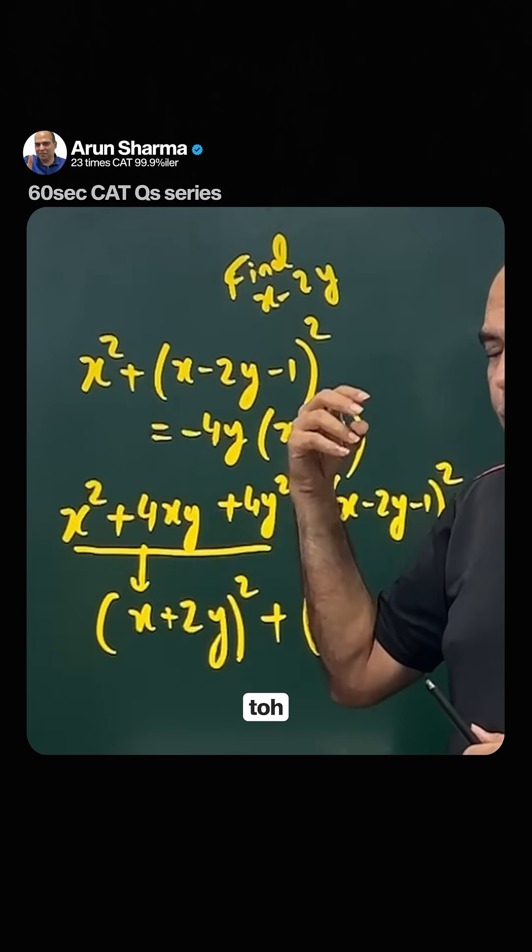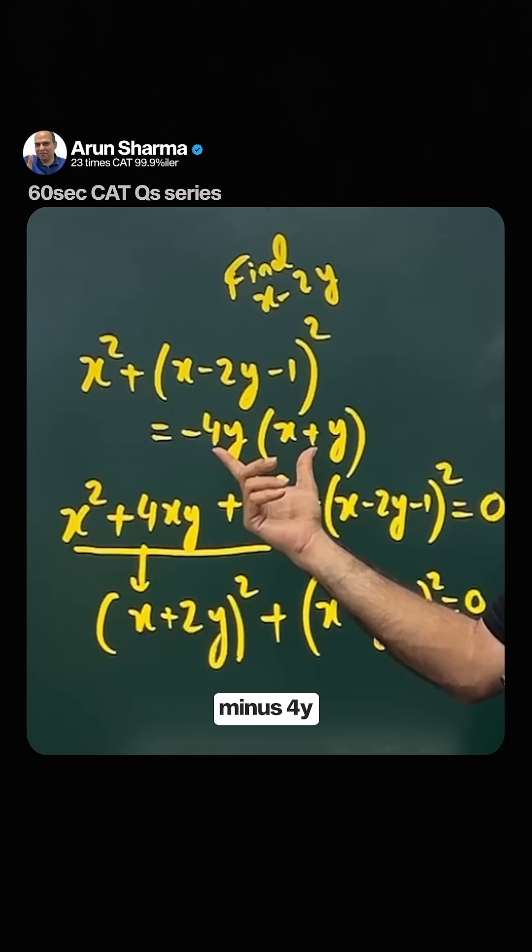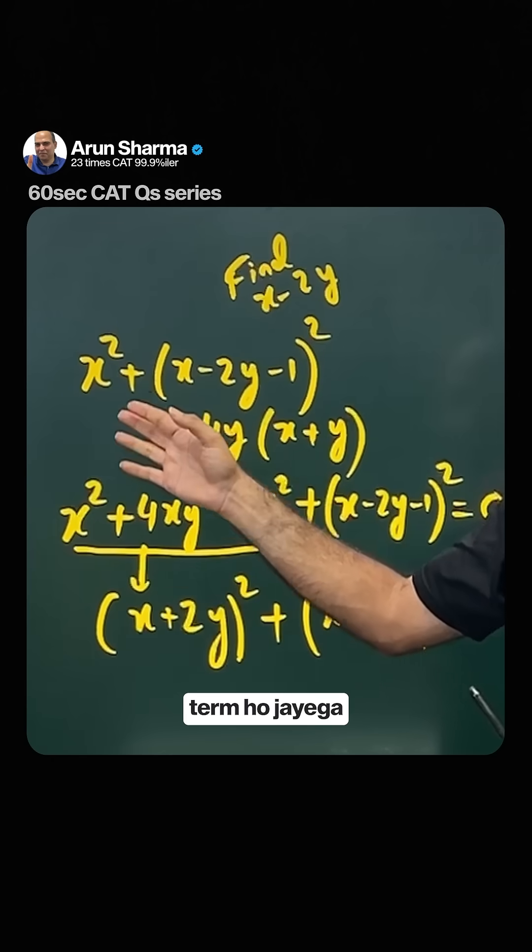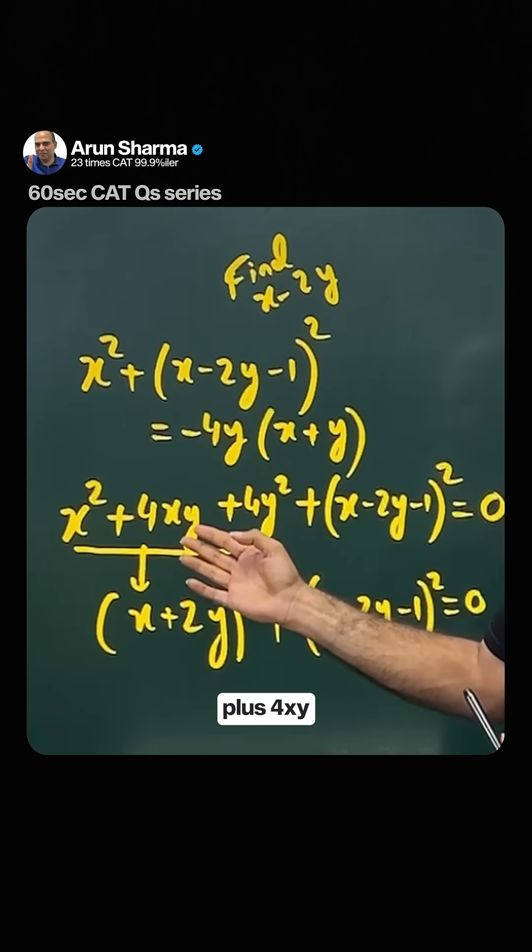When we see this expression, the natural reaction is that if we take this minus 4y into x plus y, if we take it here and expand it, this term will be x² plus 4xy plus 4y².